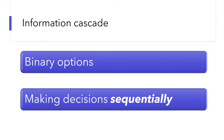What are the conditions to set off an information cascade? There are two primary conditions. First, a decision has binary options. To make a decision, you need a choice set, and in the case of an information cascade, your choice set is very narrow — either yes or no: whether to join a protest or not, whether to support a political position or not, whether to vote for a candidate or not, whether to buy a new product or not, and whether to adopt a new behavior or not. The second condition is that people make decisions sequentially, and each person can observe the choices made by those who acted earlier.